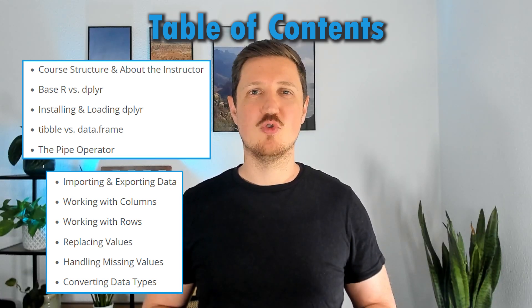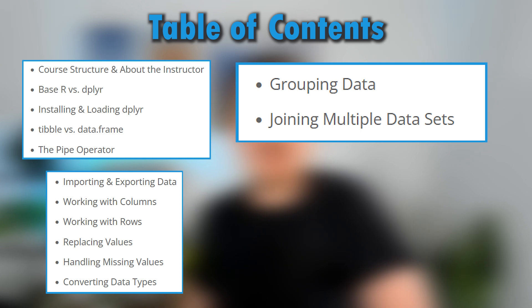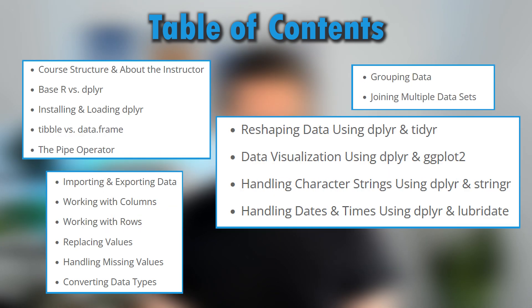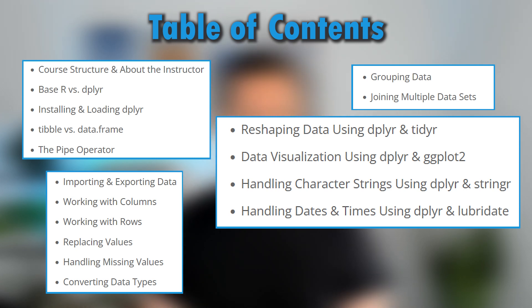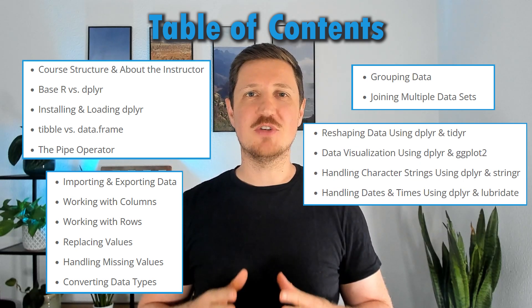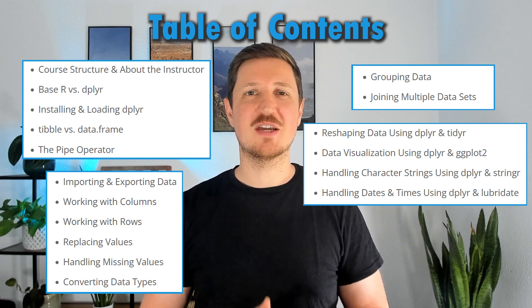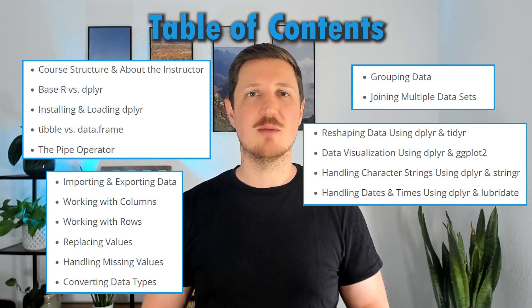We then look at data grouping and merging. I explain the different types of SQL joins and show you the advantages and disadvantages of such data concatenations. We will then combine dplyr with functions of other Tidyverse packages — these include tidyR for transforming your data, ggplot2 for data visualization, stringR for handling character strings, and lubridate for handling dates and times. This course also gives you a brief overview of the other Tidyverse packages and how to combine them with dplyr.